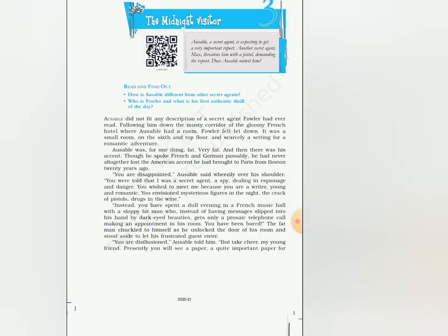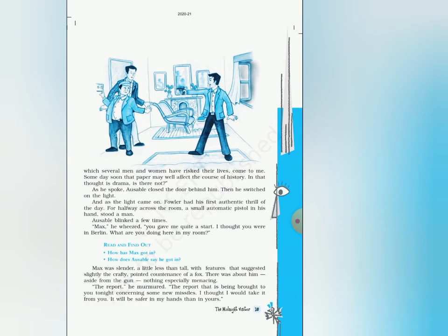Oswal ने Fowler को कहा कि तुम खुश हो जाओ — अब तुम एक paper देखोगे, एक important paper। यह paper इस lesson में बहुत important है। इसके लिए कई लोगों ने अपनी जानें जोखिम में डाली हैं — Max और दूसरे characters भी इस paper के लिए हैं। Oswell कह रहा है कि यह paper बहुत important है और इतिहास की दिशा बदल सकता है।